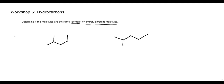Let's work through the first molecule. We can quite simply see we have a one, two, three, four, five carbon chain, which is a pentane, with a methyl group on the second carbon. This would be called 2-methylpentane.